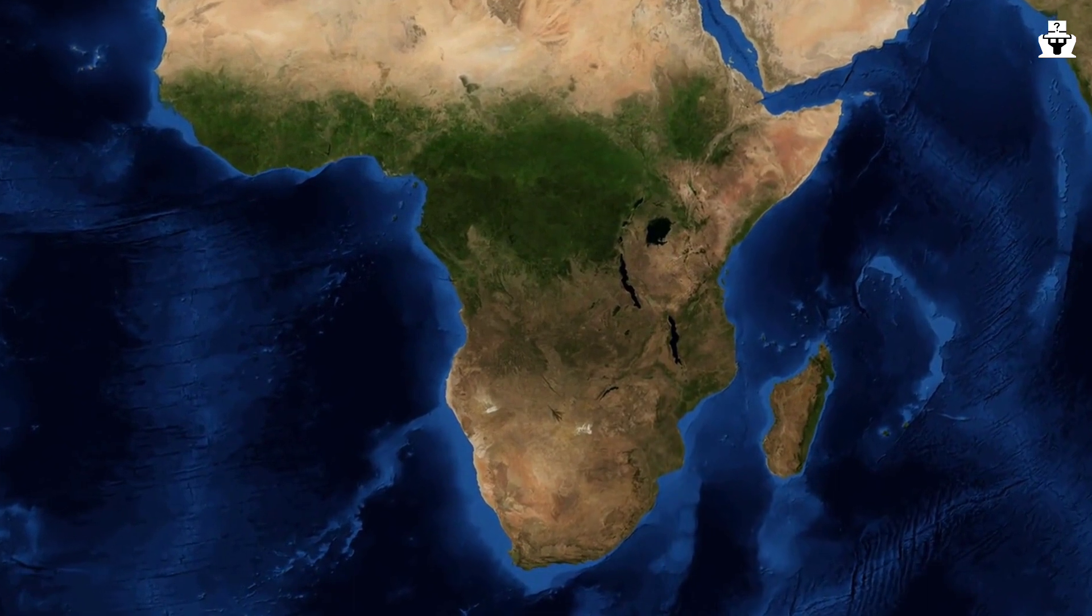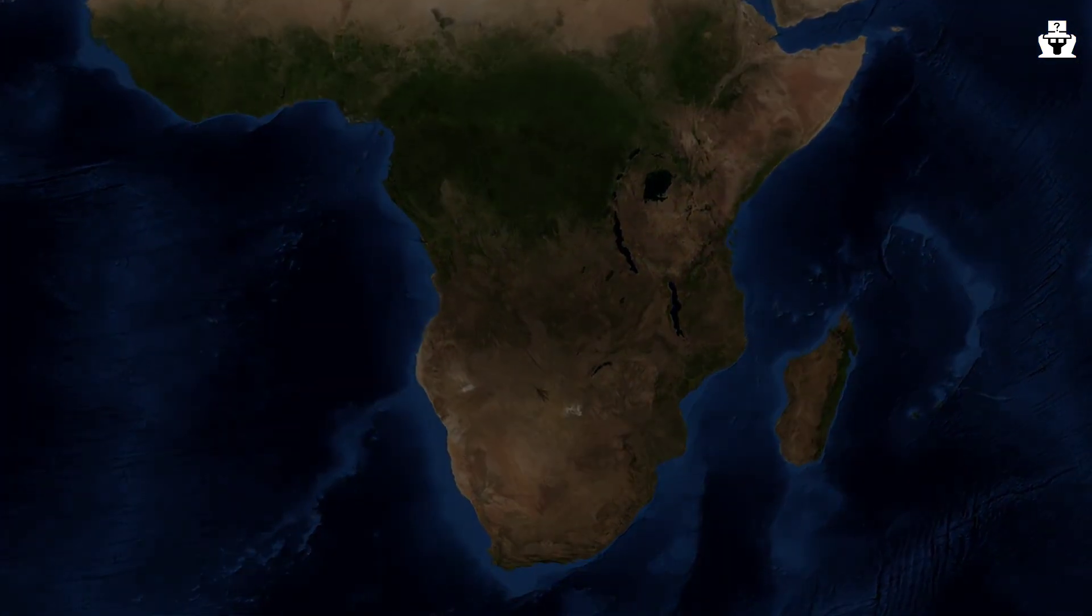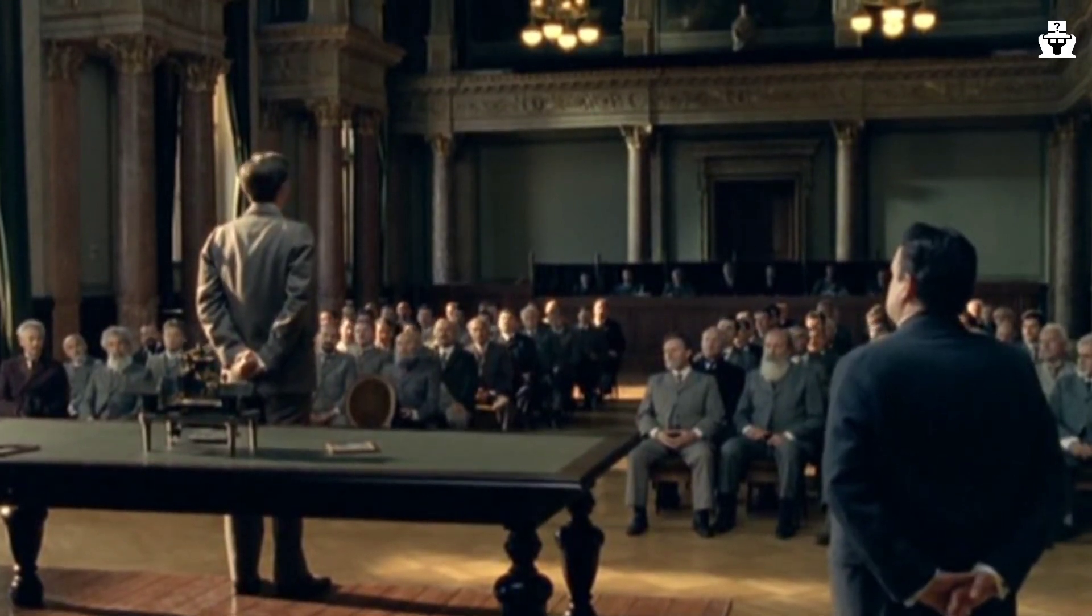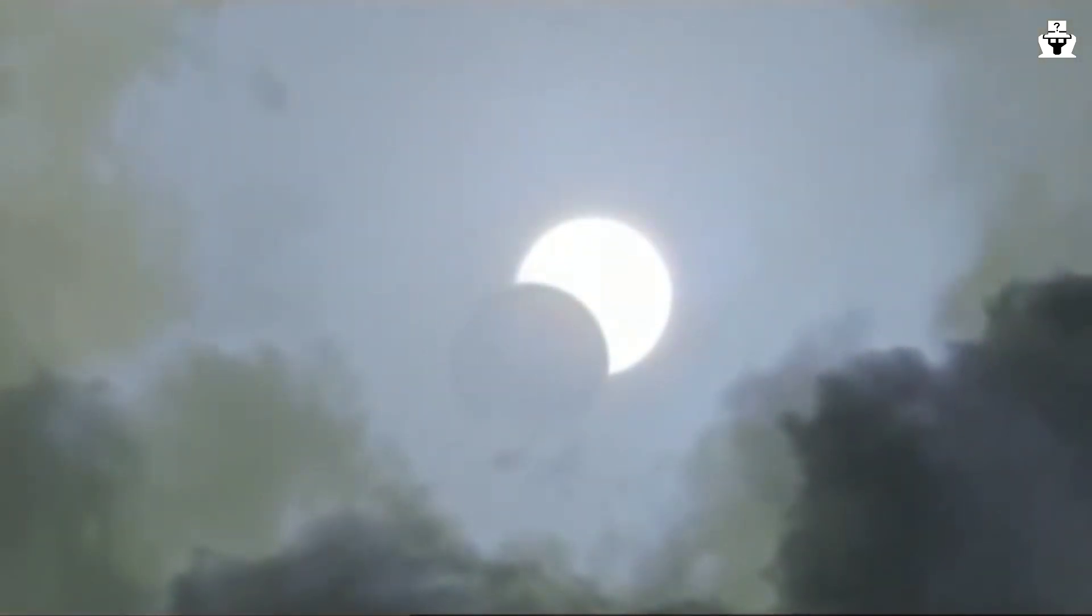The observations were difficult due to cloudy weather and equipment malfunctions. Eddington was determined to take the photos because if the experiment did not happen now, the association would not give another chance to test Einstein's theory. Suddenly the cloud went away and the solar eclipse happened in clear sky. Eddington took many photos of space during the solar eclipse.